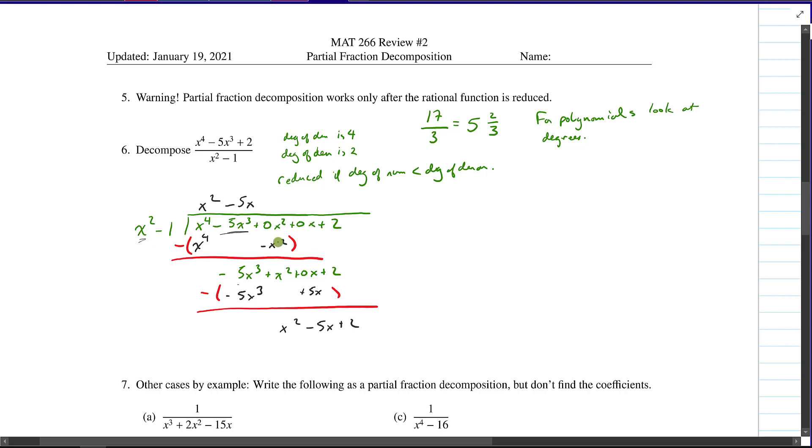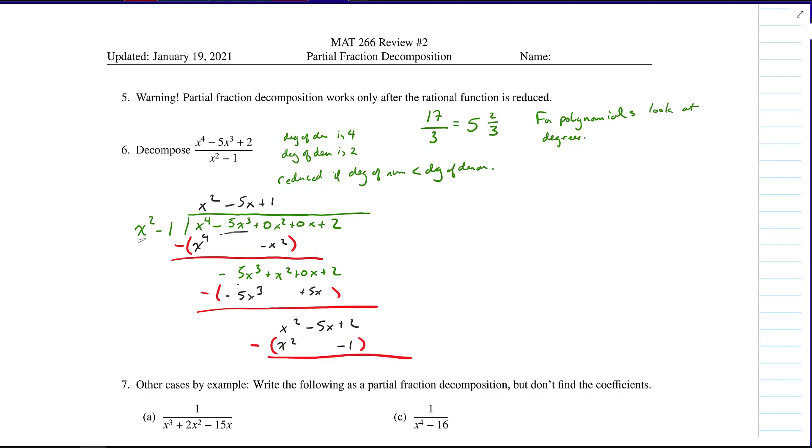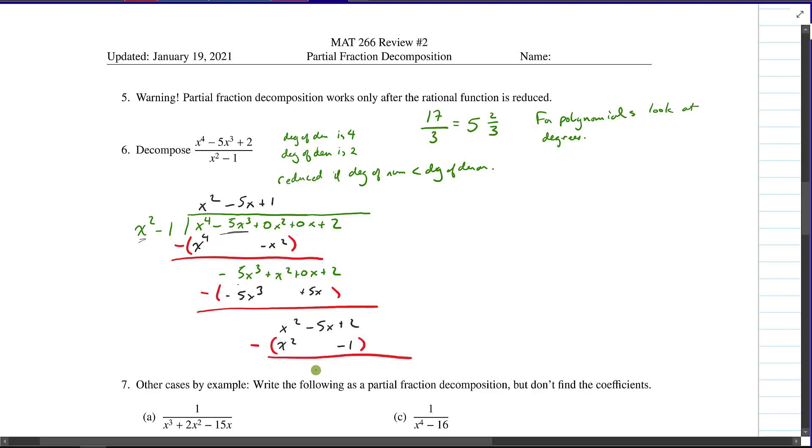So we say, well, what can I multiply x squared by to make it look like x squared? And the answer is just 1. So we multiply by x squared. We carry that, the rest of the multiplication through. And then I subtract down. Let me be consistent. And when I do so, I get a minus 5x plus 1.